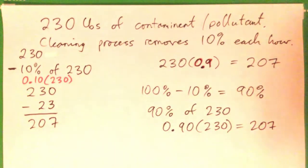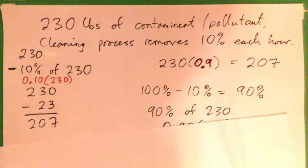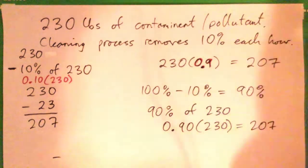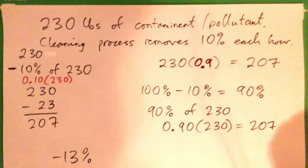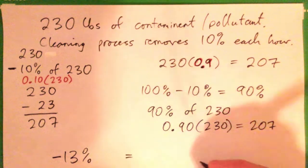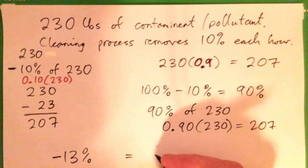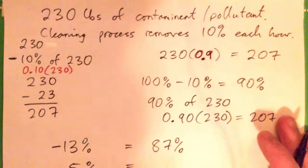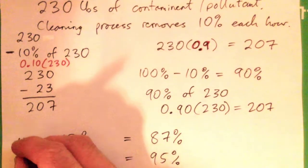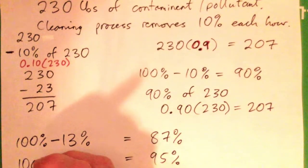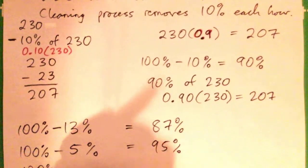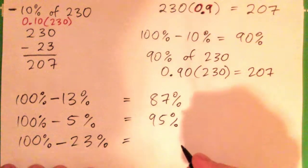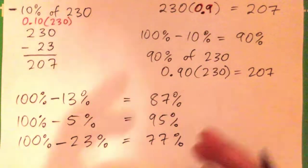Using this trick, now we can make a little formula. By the way, this holds for anything. If you're taking away 13% each hour, that means subtracting 13% is the same thing as getting 87% of that thing. Subtracting 5% of something is the same thing as getting 95%. So if we had a cleaning process that removed 23% each hour, then each hour we get 77%. That's the trick.